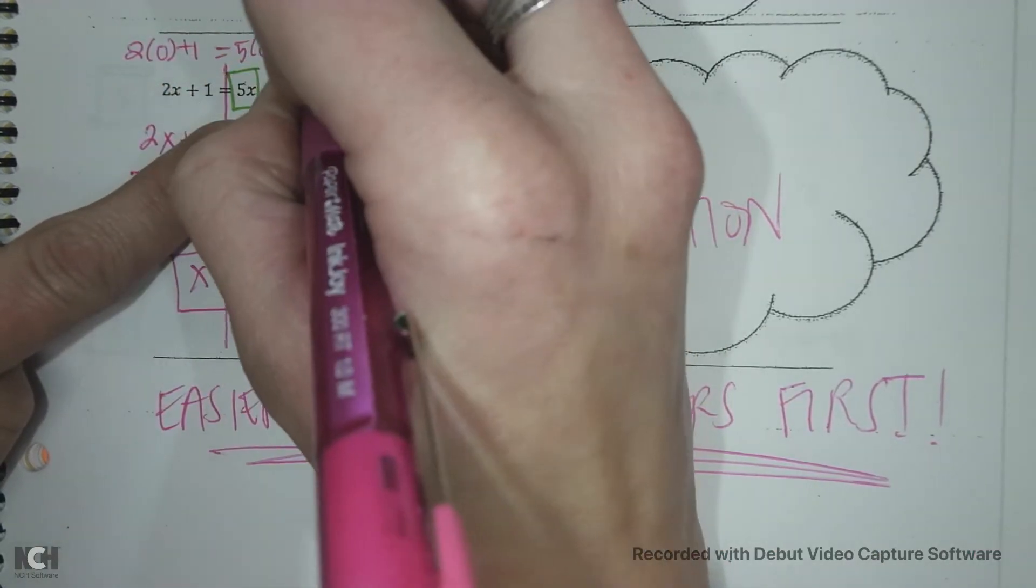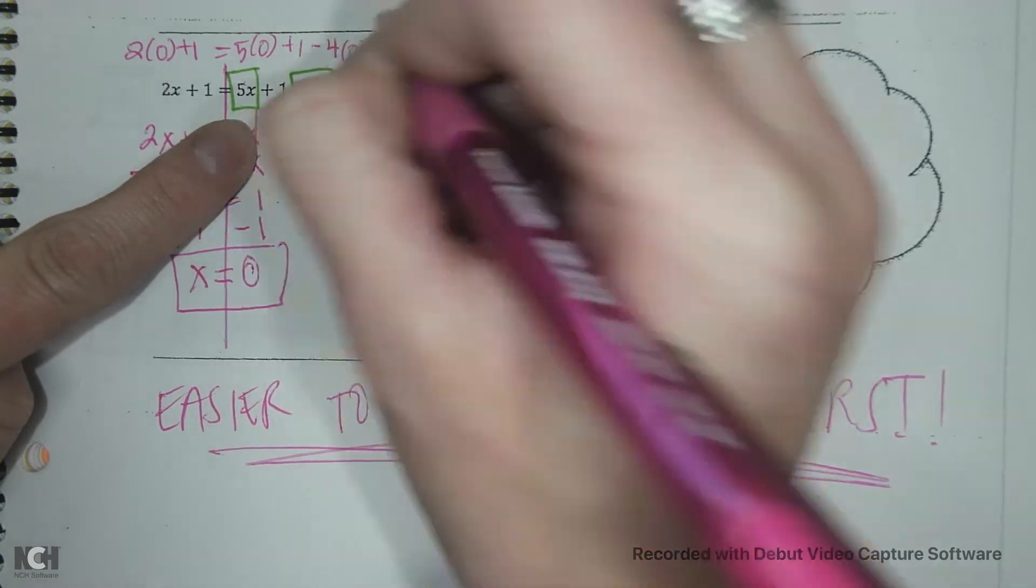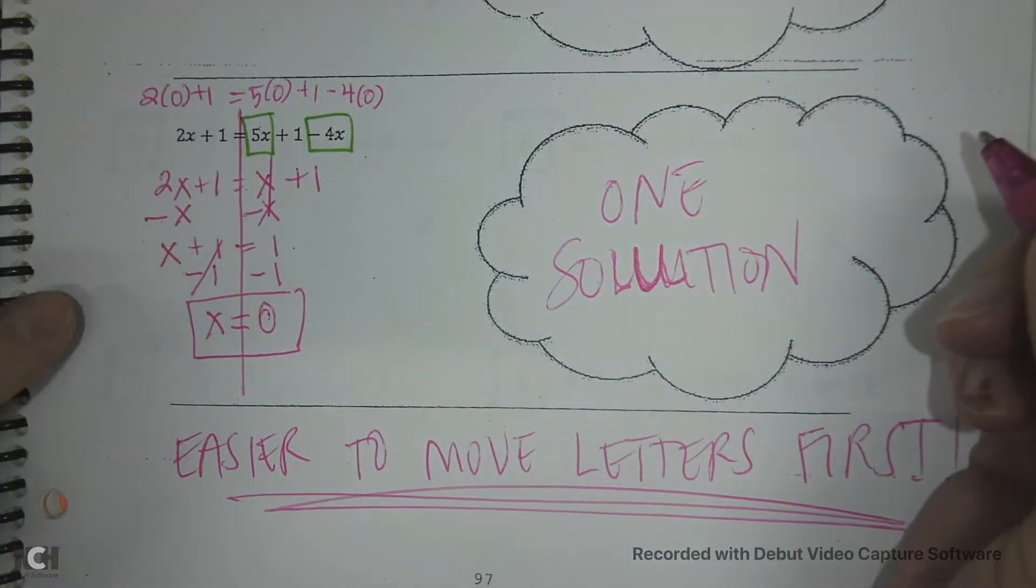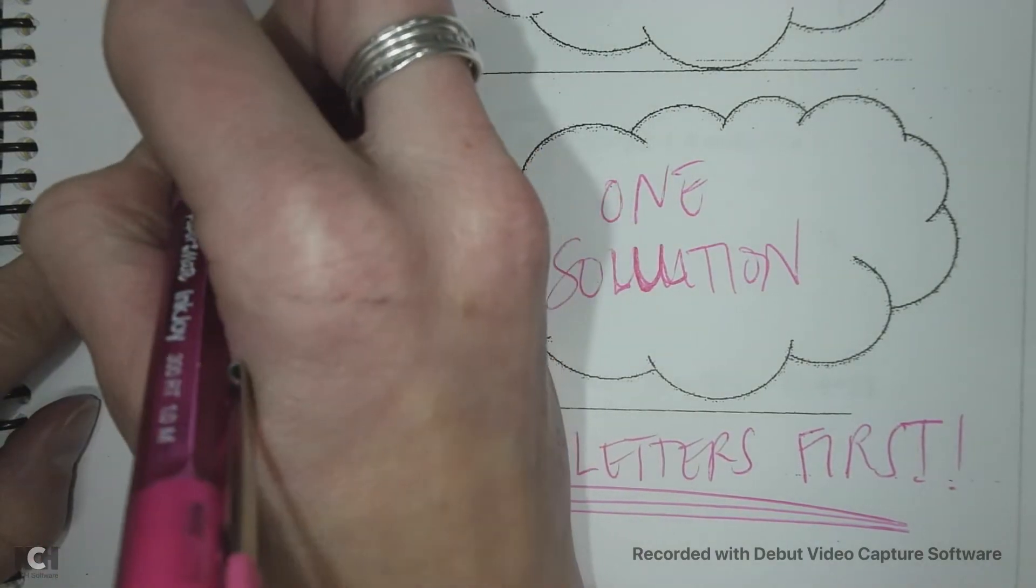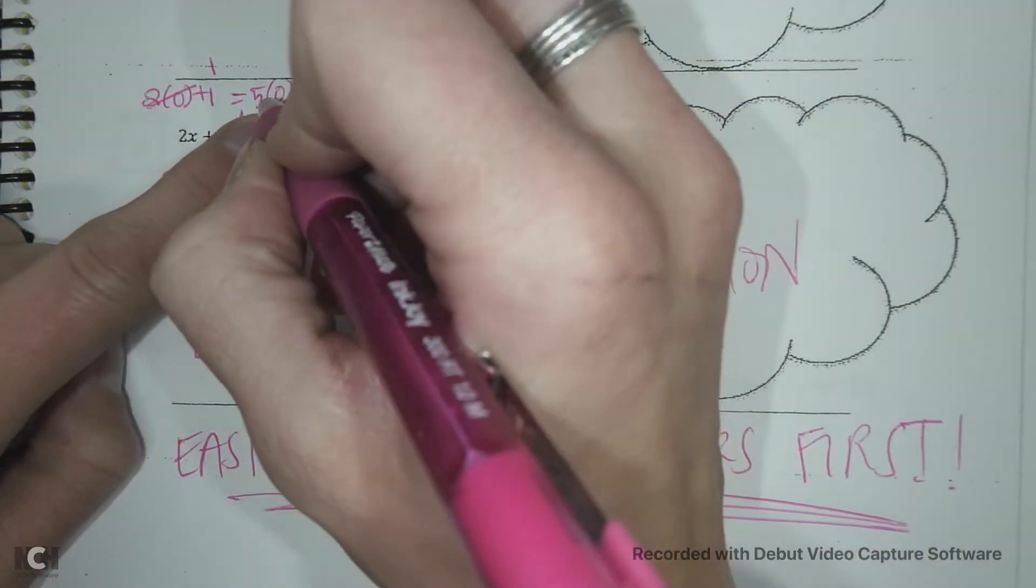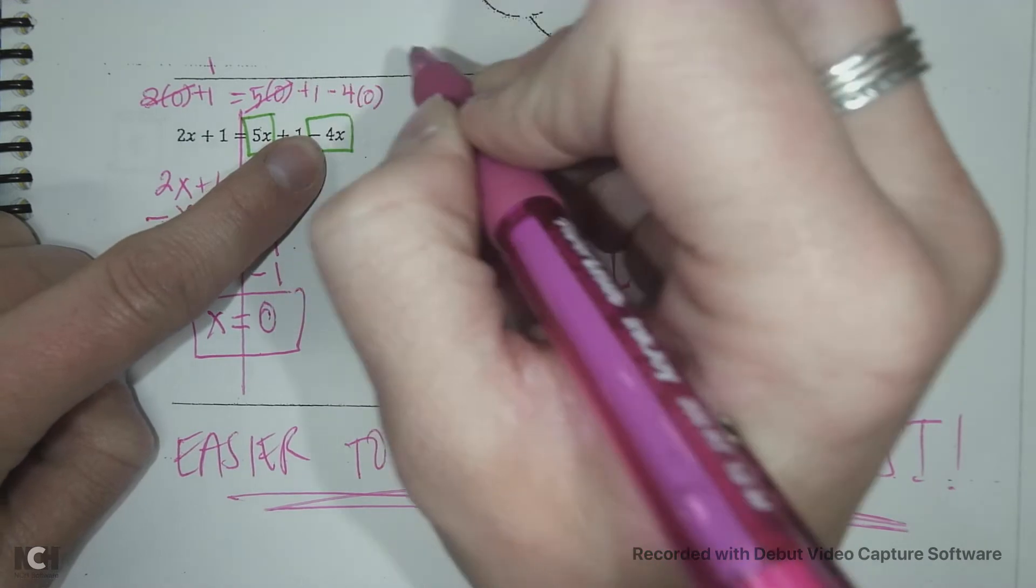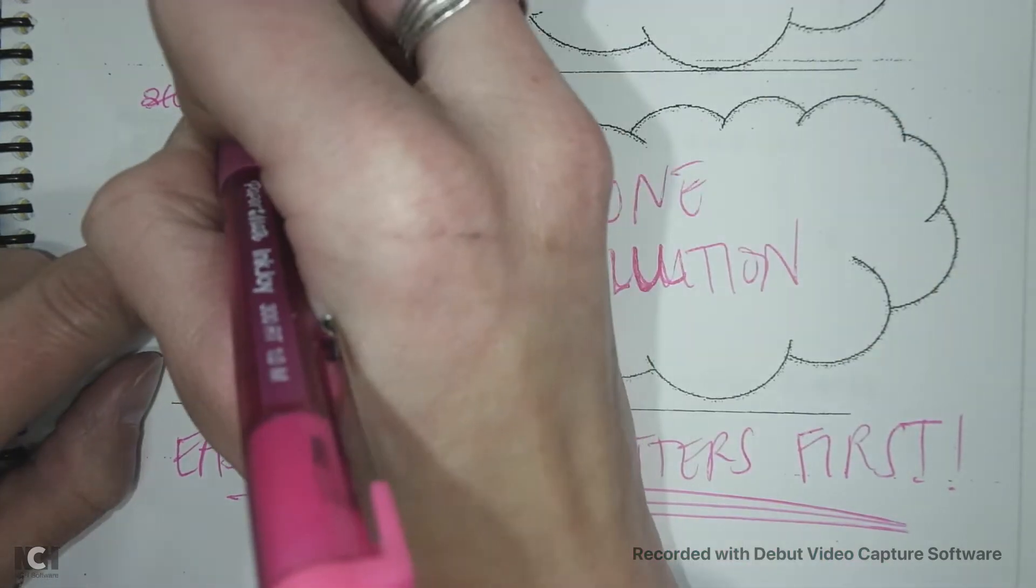So if I have 2 times 0 plus 1 and I plug my 0 everywhere I see my x on this side. 5 times 0 plus 1 minus 4 times 0. Then that means 2 times 0 is 0 and then I'm left with my 1. And over here 5 times 0 is 0. Negative 4 times 0 is 0. So I'm just left with my 1.